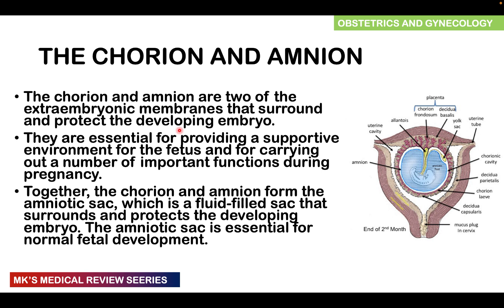To give you some perspective, let's talk about the chorion and the amnion. These are the two membranes that surround the embryo — extra-embryonic membranes predominantly protecting the developing embryo. They are essential for providing a supportive environment for the fetus, as well as carrying out a number of other important functions. Together they form a sac, which we refer to as the amniotic sac, and this sac contains fluid on the inside known as amniotic fluid, which is essential for normal fetal development.